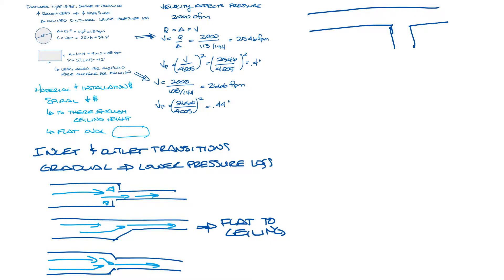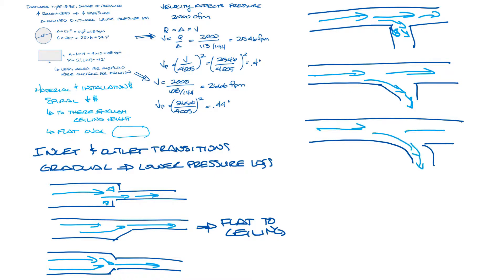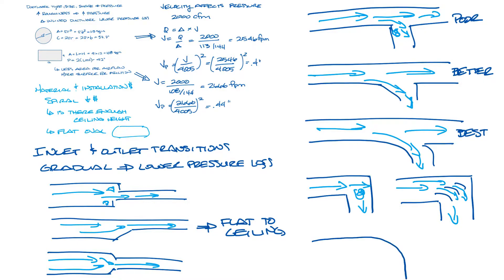Same thing if you have to tap off on your ductwork. An abrupt 90 degrees will give you a lot of turbulence and will be poor from a standpoint of pressure loss. It would be better if you could transition like this middle one, and best if you could do a soft transition completely. For elbows, a hard 90 will be your worst option because there will be a lot of turbulence and pressure drop. Your next best option would be to put in turning vanes that would guide the air through the transition, and then your best option would be to have a soft 90.